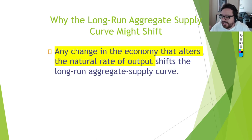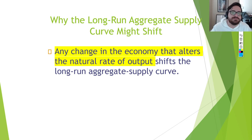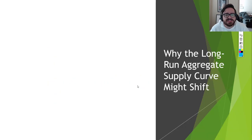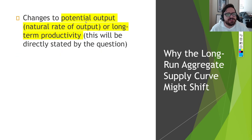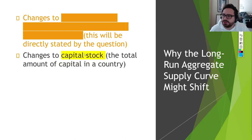LRAS shifts are very rare — I don't think I've ever seen it drawn on an actual AP exam. The idea is that if something changes the natural rate of output — our ideal amount of production — it'll shift the LRAS, because the X value where it's drawn is natural output. If natural output was 500 billion and is now 600 billion, you move the LRAS curve to the right.